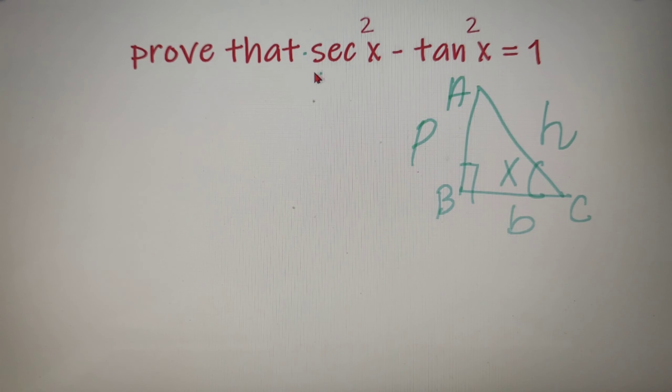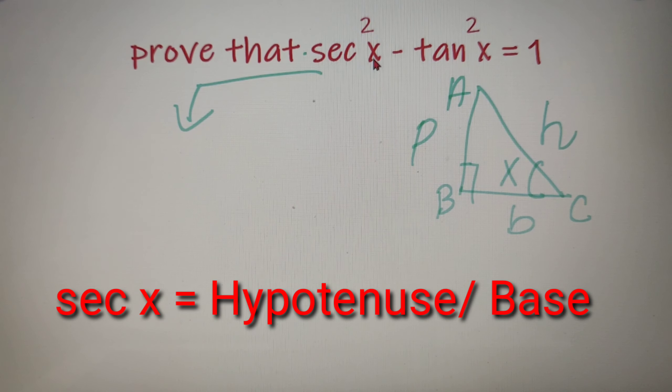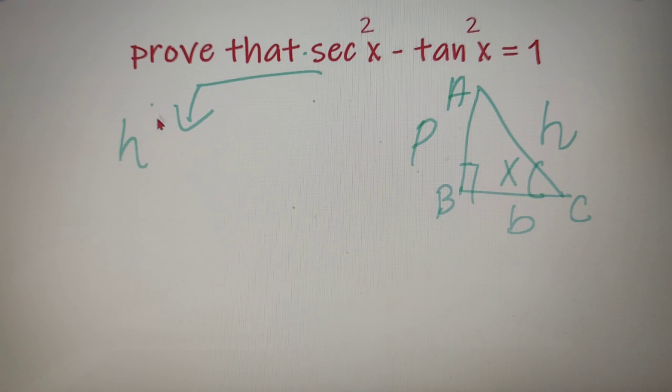Now we know that AB is a perpendicular, BC is a base and AC is a hypotenuse. Now we know that sec x is nothing but hypotenuse by base.